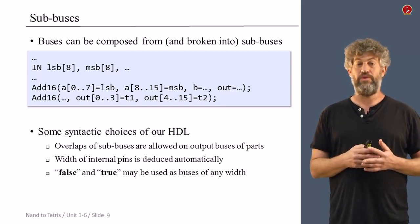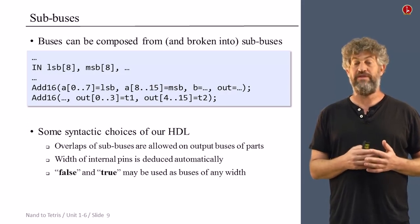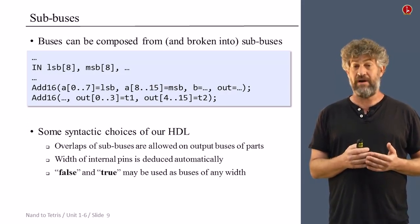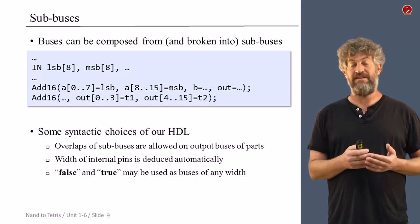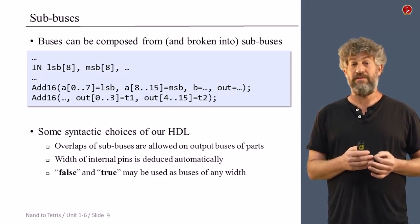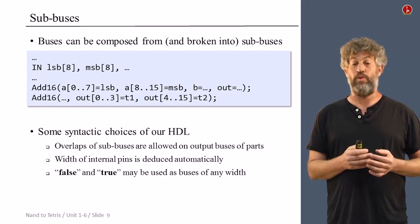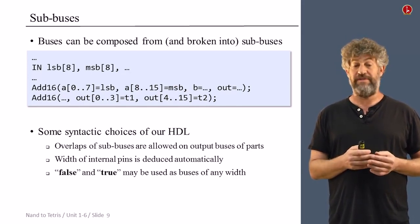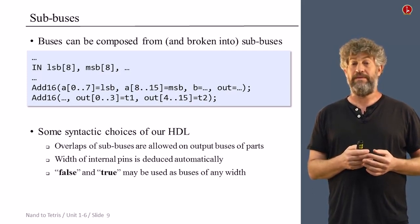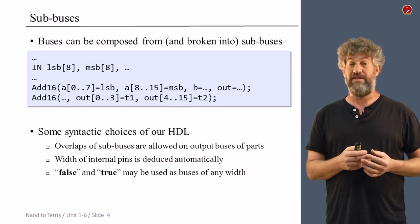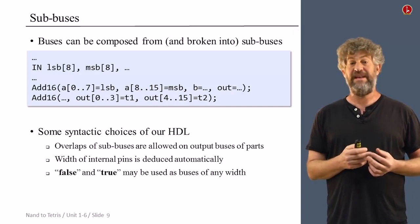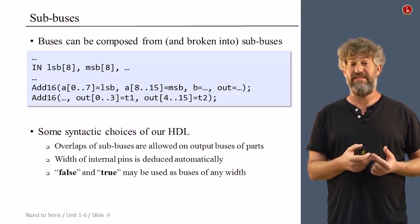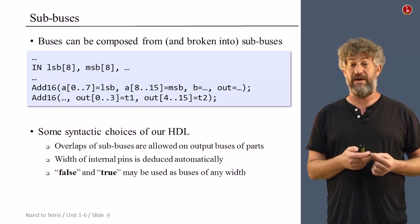Now, different hardware description languages deal with all these issues and have different syntactic conventions. And of course, for our hardware description language, which you will need to work with in the project, you can find the exact specification on the website. I would like to say just a few words about some peculiarities, if you wish, of our HDL that you may find convenient to use. First of all, we do allow overlaps of sub-buses. So you can take, let's say, bits 0 to 5 and output them as one bus of 6 bits. And then again, take bits, let's say, 3 to 7 and output them as another bus. So simply outputting the same bus in multiple ways that may be overlapping sub-buses. We allow that.